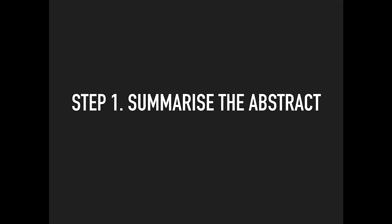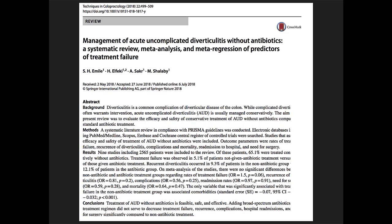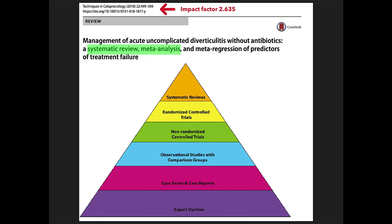Step 1: with any abstract, summarise. This is a study published by Emile et al. in July 2018 in the journal Techniques in Coloproctology, which has an impact factor of 2.635. This is a systematic review with meta-analysis, which could be either 1a, 2a, or 3a in the Oxford hierarchy depending on the type of studies that were included.